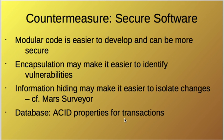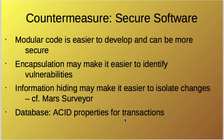There are basic software design principles to keep in mind when developing secure software. You want to use modular structure, because it's easier to develop and can be more secure. Encapsulation and object-oriented features make it easier to identify vulnerabilities. For example, encapsulation and information hiding could have made it easier to isolate the changes we saw in the Mars surveyor problem.